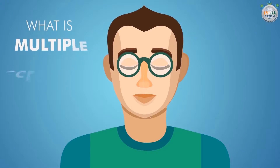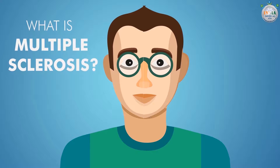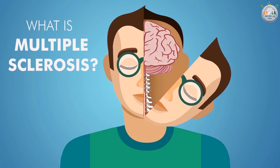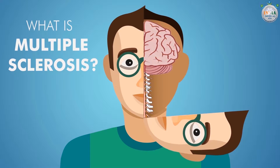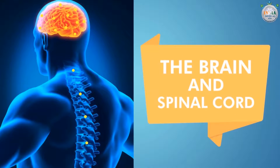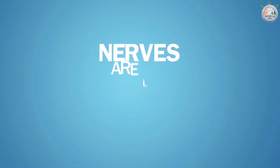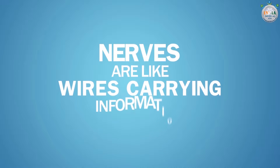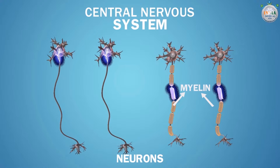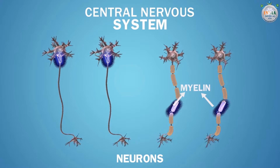What is multiple sclerosis? Multiple sclerosis is a neurological disorder that affects the central nervous system, which includes the brain and spinal cord. Nerves are like wires carrying information signals to and from the brain and are covered with a layer called myelin.